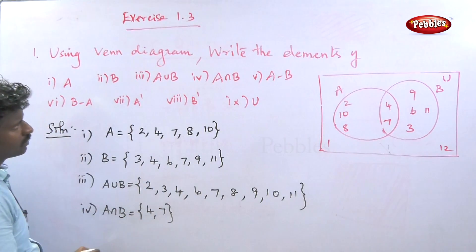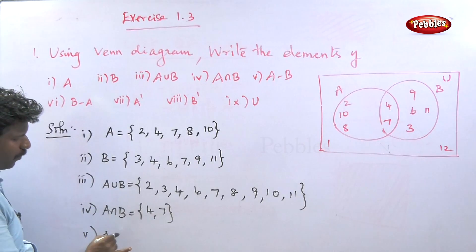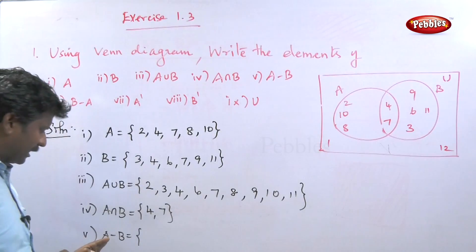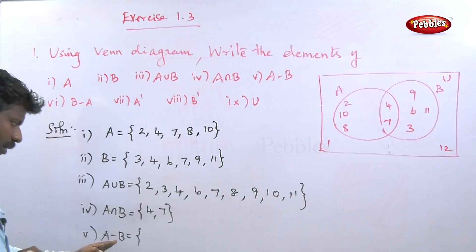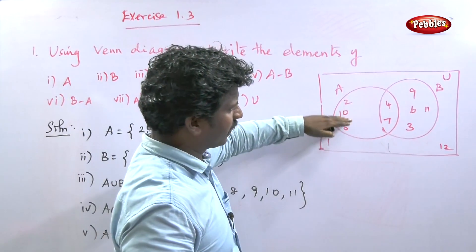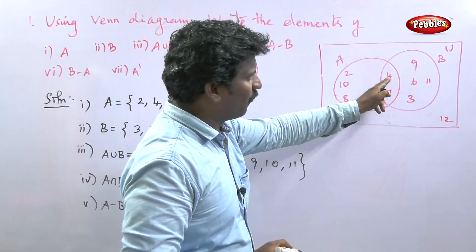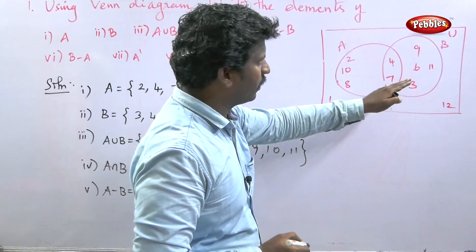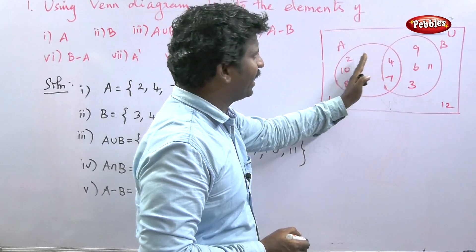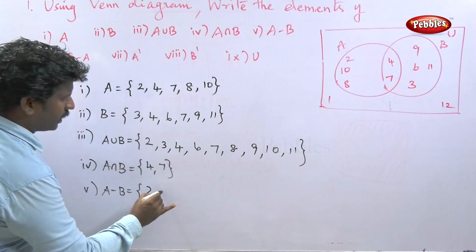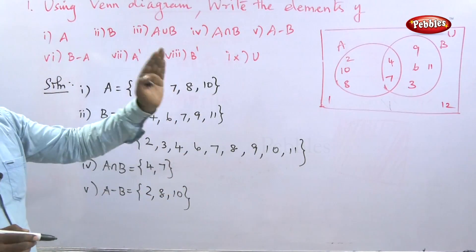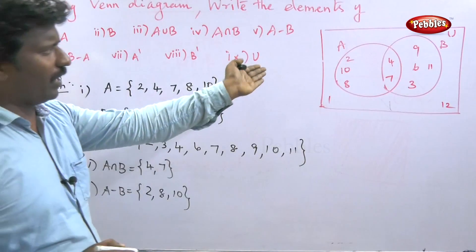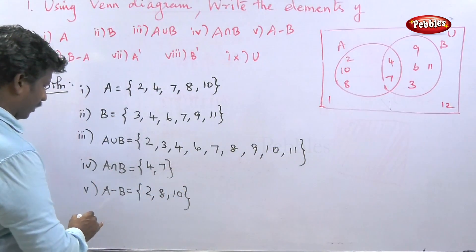The fifth one is A minus B. Elements in A but not in B. Avoiding the common part 4 and 7, the remaining elements in A are 2, 8, 10. This is A minus B.